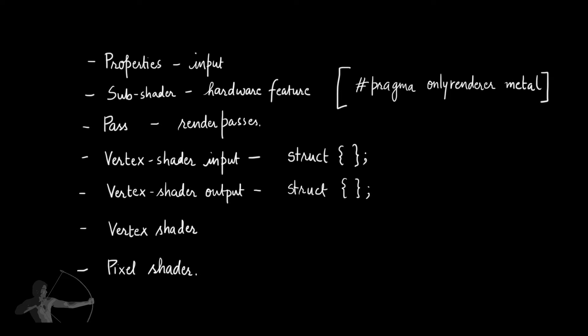In the previous chapter we understood what are the different components of the shader. In this chapter we will write a bare bone, which is the bare minimum of the shader, to understand how these components work inside the code.